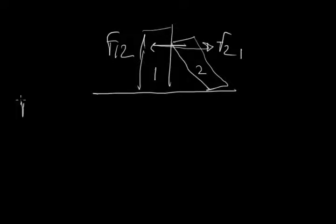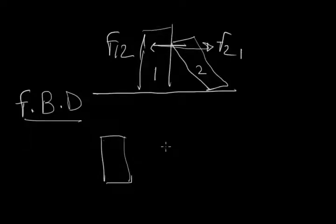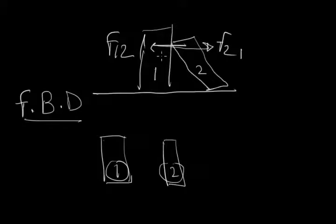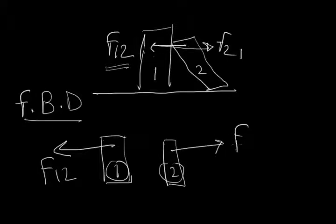Now FBD deals with the bodies separately. So we have to take one and two separately and we have to draw the forces on one and two separately. As you can see from this particular figure that the force acting on block one is F12, and for the second one it is F21. So it is again directionally opposite.